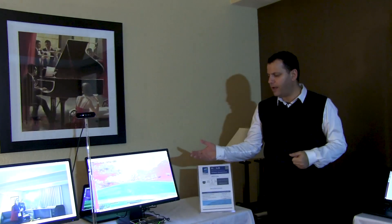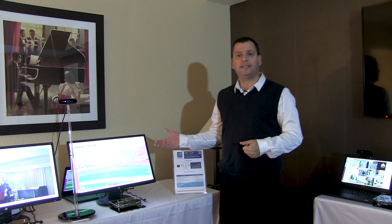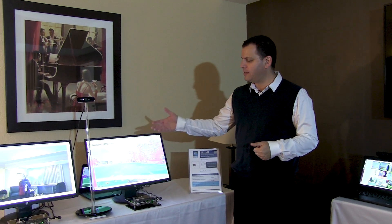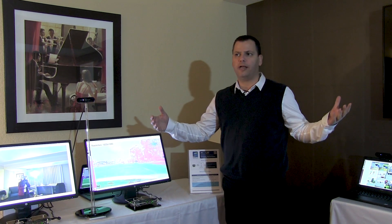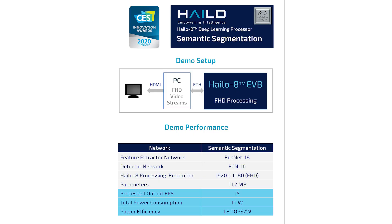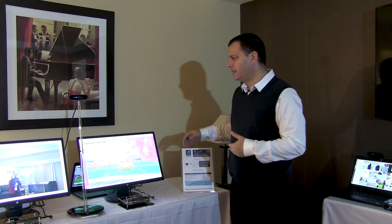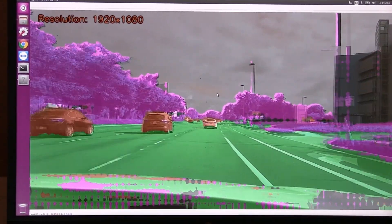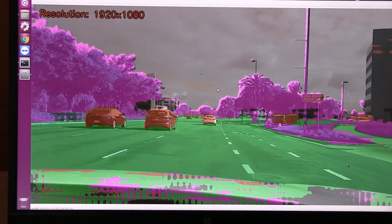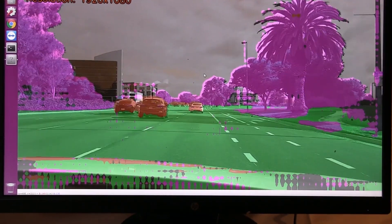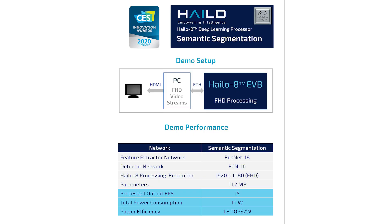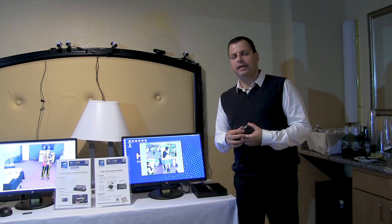Basically it depends on the customer and what trade-off they want to make — whether to go to higher FPS, higher full resolution, or to go to multiple streams. Here we have Full HD semantic segmentation. This is a standard network; all the networks I'm showing you right now are original networks from the original paper — we didn't do any pruning. Here it's semantic segmentation at Full HD resolution, 1920 by 1080, and we are running it at less than 1.1 watts. The power efficiency of this demo is around 1.8 TOPS per watt.